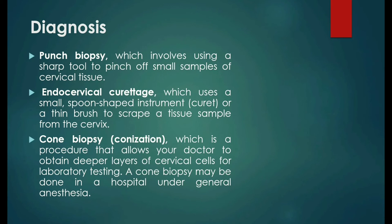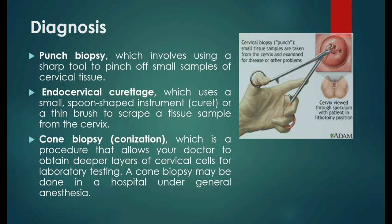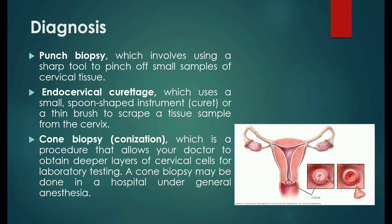A special magnifying instrument or colposcope is used to check for abnormal cells. During the colposcopic examination, doctors will likely take a sample of cervical cells, known as a biopsy, for laboratory testing. To obtain tissue, doctors may use punch biopsy, which involves using a sharp tool to pinch off small samples of cervical tissue; endocervical curettage, which uses a small spoon-shaped instrument or curette or a thin brush to scrape a tissue sample from the cervix; and cone biopsy or conization, which allows the doctor to obtain deeper layers of cervical cells and may be done in a hospital under general anesthesia.